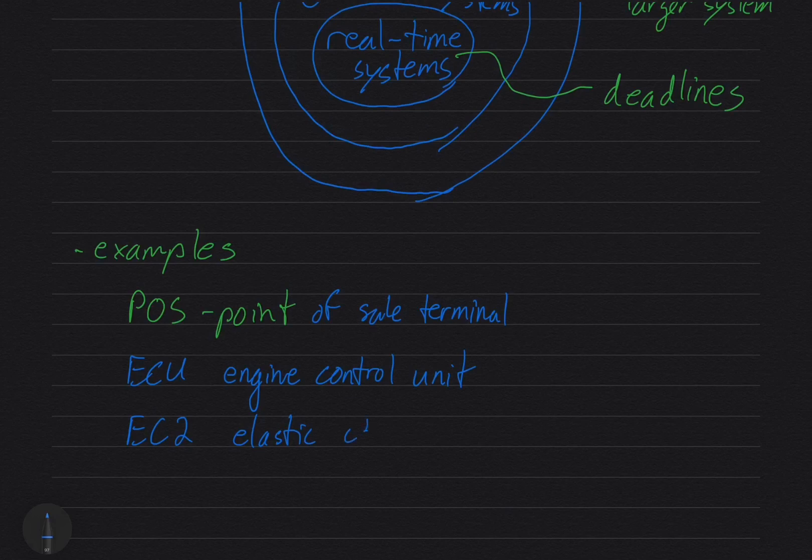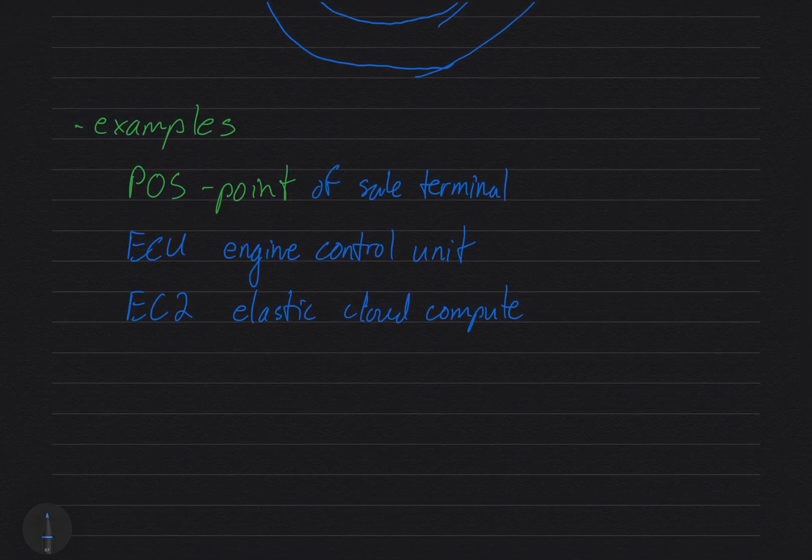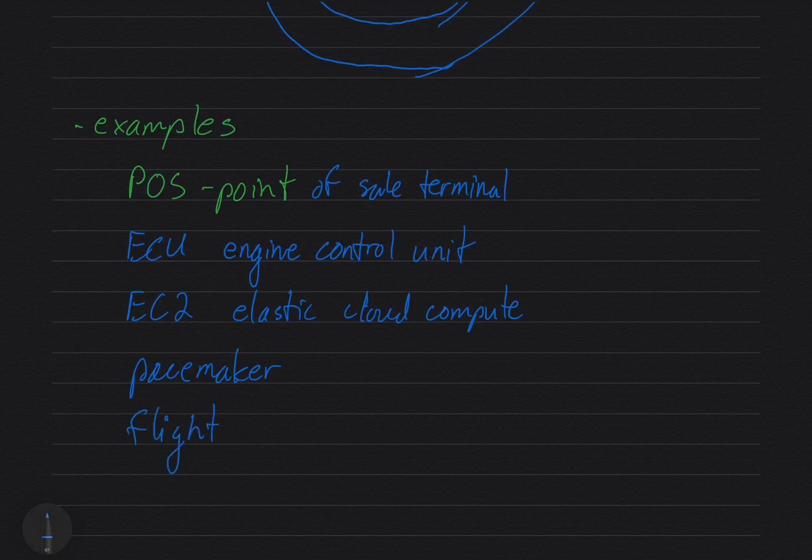Next example is EC2, and this is Amazon's Elastic Cloud Compute. You can rent time in Amazon's cloud and run your business from it or stuff like that. There's other cloud computing services obviously - Microsoft has Azure and IBM has a service, and I'm sure there's lots of other ones out there. Here is another one: a pacemaker. They'll put this into people who have bad tickers, or problems with their hearts, and it will help time the operation of the heart. We've got flight control systems.